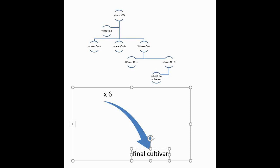Before we begin, we must define a few terms to make it easier for everybody to follow. First, we must define selfing. Selfing is a process used to produce self-pollinated cultivars of various plants. The process usually happens in plants where individual plants can pollinate their own flowers rather than receive pollen from another plant.